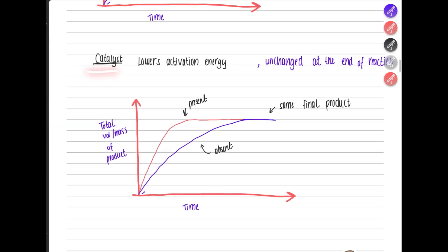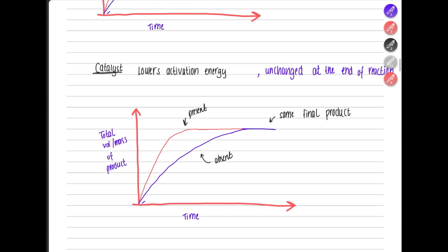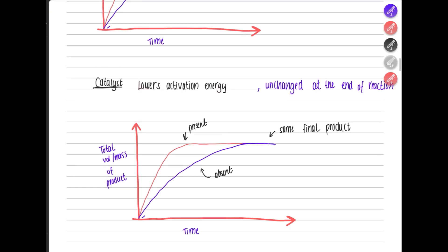A catalyst is something added to a reaction that does not react with the reactants. It speeds up the reaction by lowering the activation energy, increasing the rate of reaction. Importantly, a catalyst is unchanged at the end of the reaction — it does not react with the reactants or products. The rate is higher, but the final volume of product is the same.